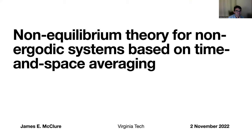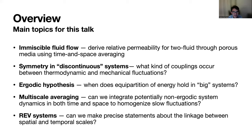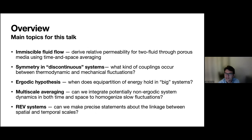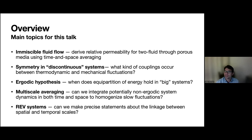The main topic for this talk is to develop a strategy to derive the relative permeability for two-fluid flow using time and space averaging. The main motivation comes from issues created by geometric discontinuities when you have topological changes. This creates problems because if you can't take a derivative, certain kinds of theoretical approaches are off the table. This gives a framework to understand what couplings can occur between thermodynamic and mechanical fluctuations when subdividing systems.